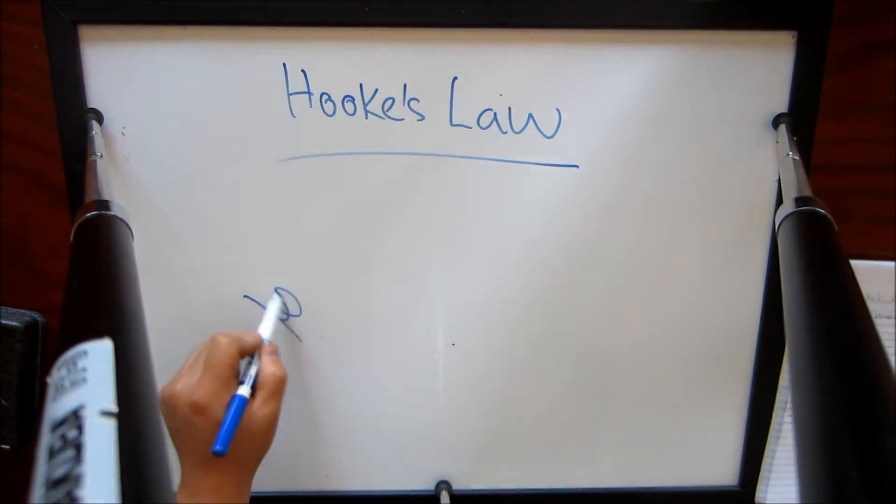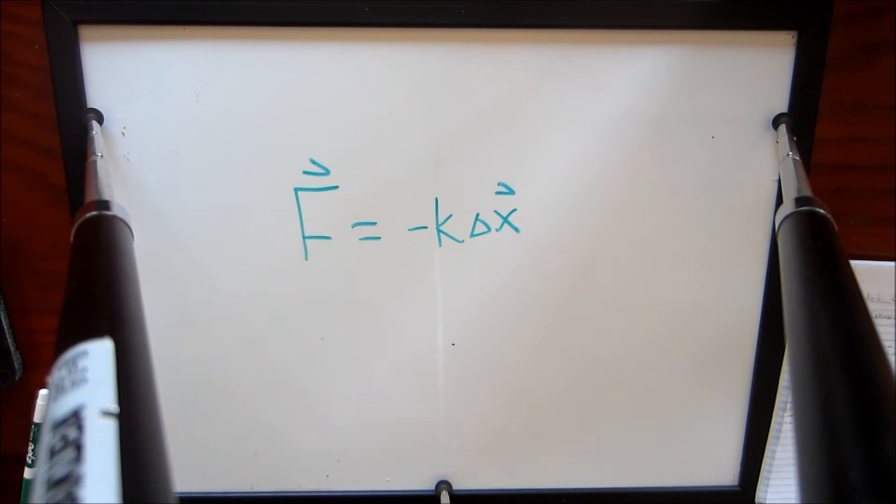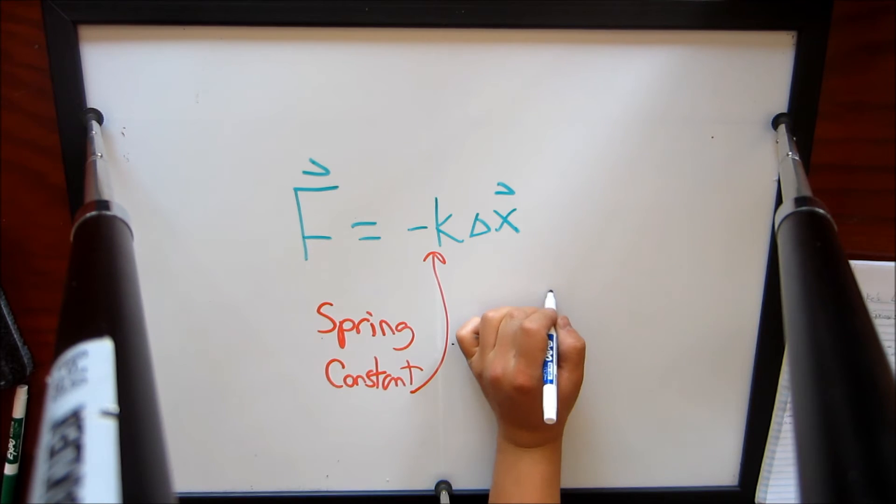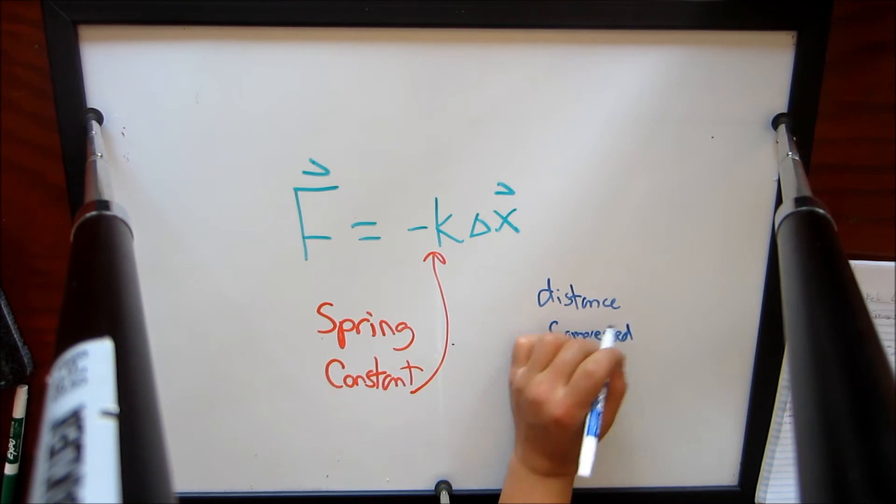The final physics concept is Hooke's law. Hooke's law states that the force of a spring is equal to negative K delta x, where K is the spring constant and delta x is the change in the distance that the spring is being compressed or stretched.